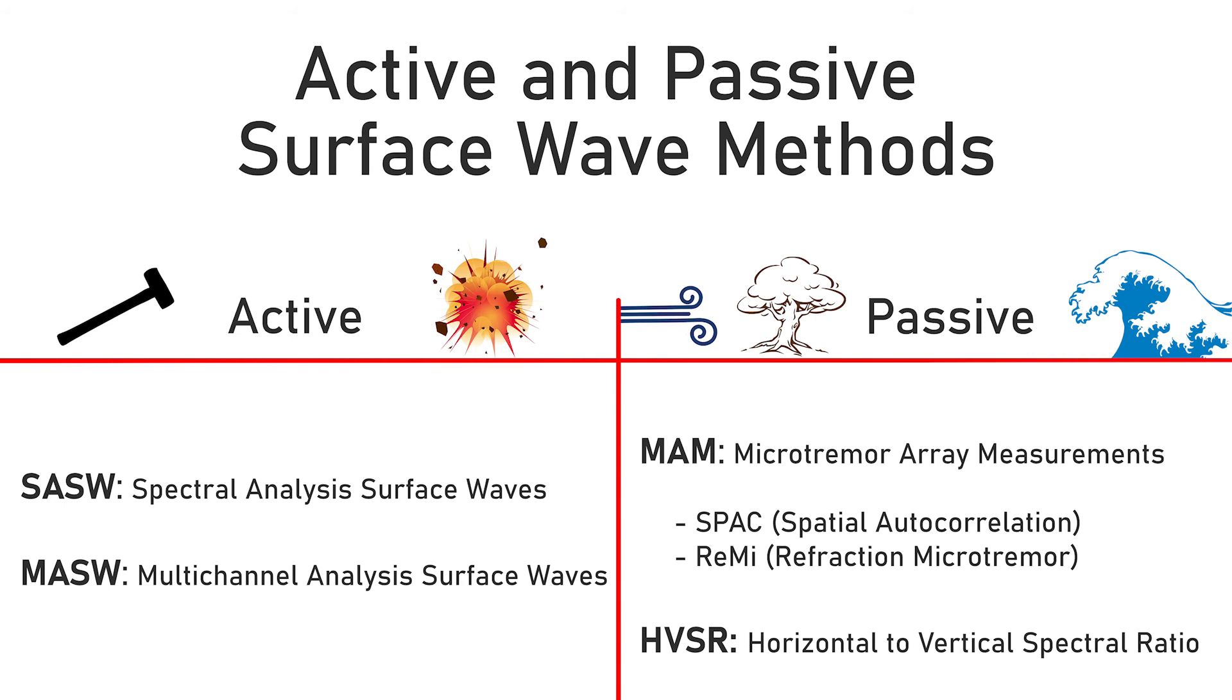There are many different geoscience applications for surface wave analysis and active and passive methods exist. The active seismic methods are SASW, or Spectral Analysis of Surface Waves, and MASW, Multichannel Analysis of Surface Waves.